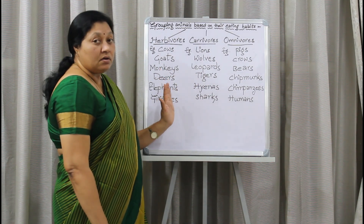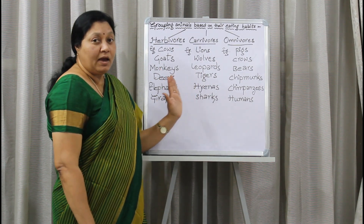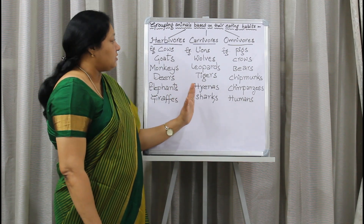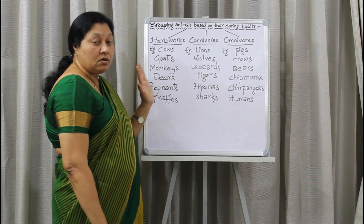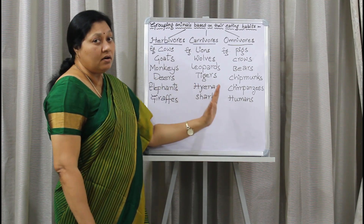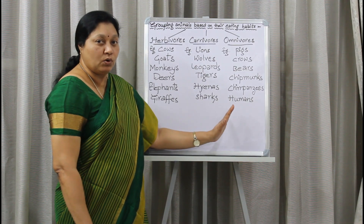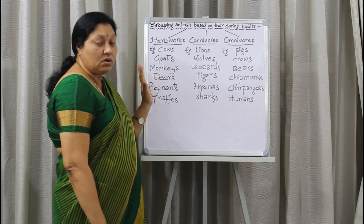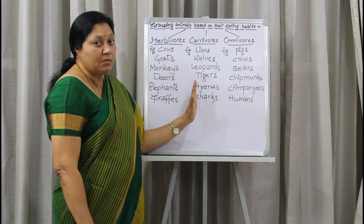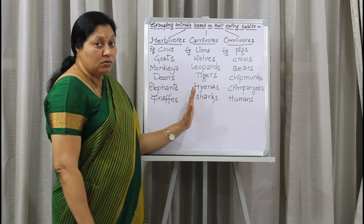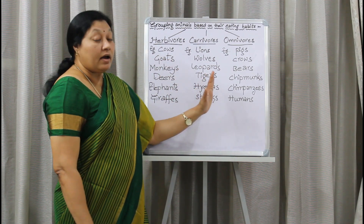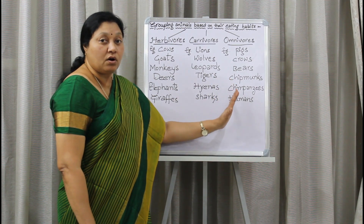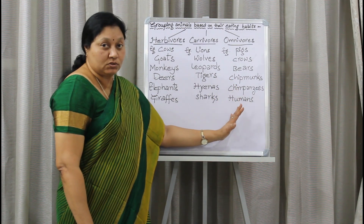So these are the three main groups of animals based on their eating habits: herbivores, carnivores, and omnivores. All plant-eating animals are called herbivores, all flesh-eating animals are called carnivores, and animals that eat both plant food and animal food are called omnivores.